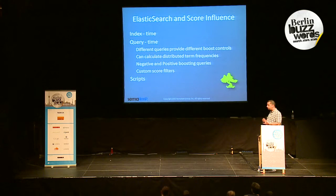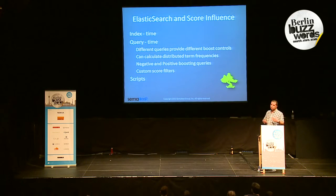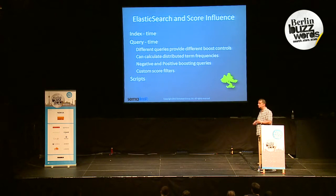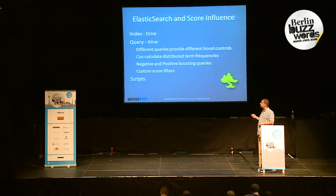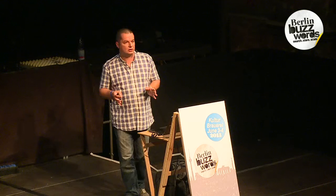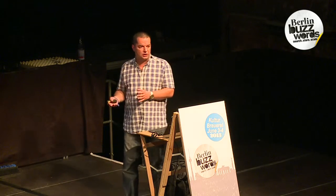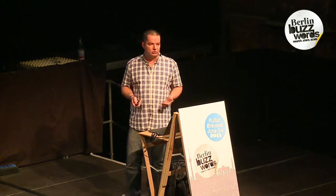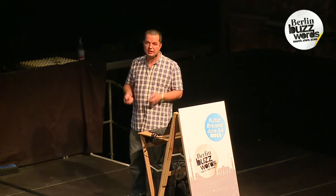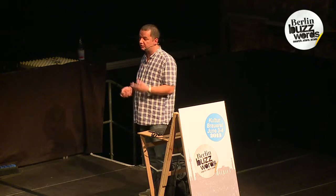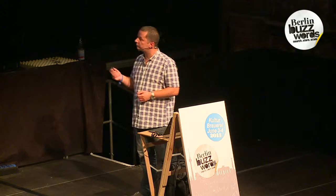In terms of Elasticsearch, we also have index time boosting. At query time, we can control terms and phrases. Elasticsearch provides different queries, for example a custom score, the constant score. We can calculate distributed term frequencies, we have negative and positive boosting, and we can use scripts to alter the relevance — for example, you can take a field, write a script to multiply it by something, or write a Java plugin that provides a native script for Elasticsearch to alter document scores.